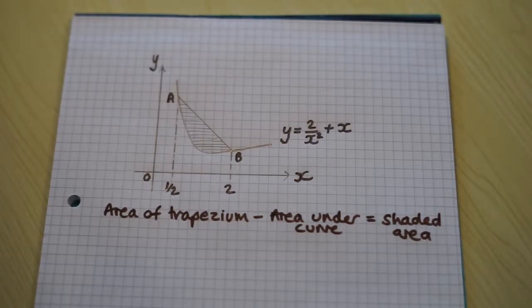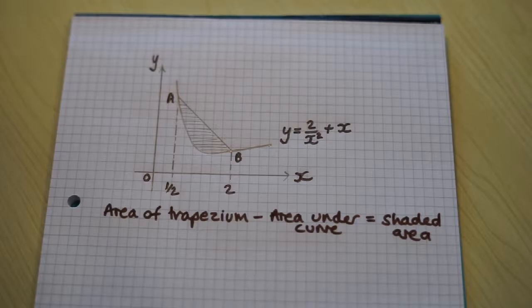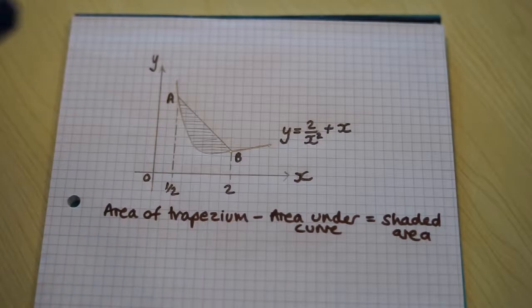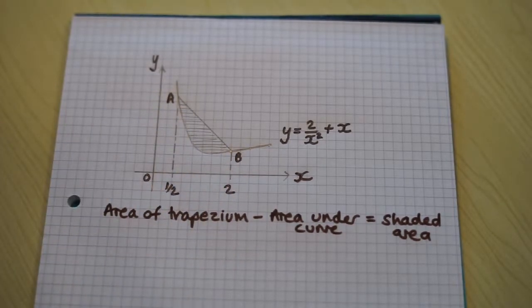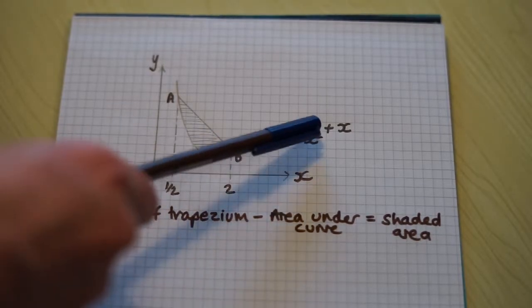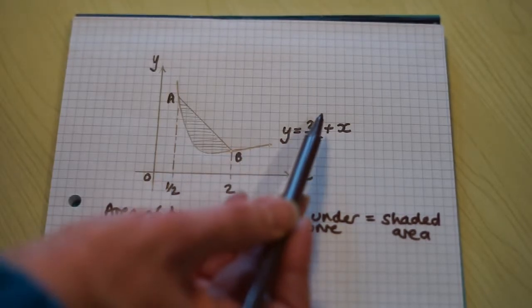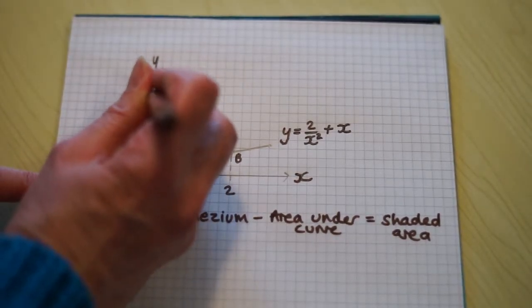First let's find the area of the trapezium. We know that the width of the trapezium is 1.5. We need to know the y values of A and B in order to find the lengths of the parallel sides in the trapezium. So we find those by substituting the x values into the equation. When we substitute x equals a half into this equation, we get y equals 8.5.